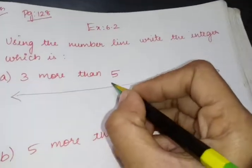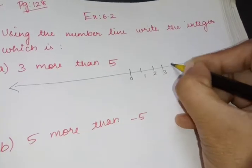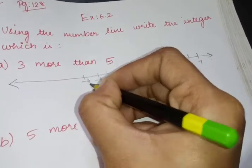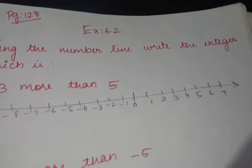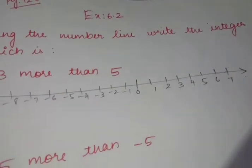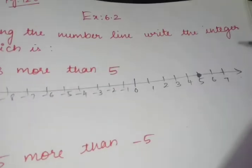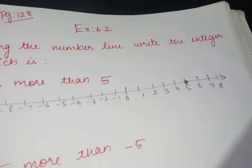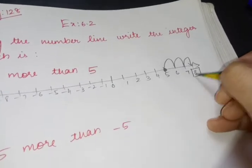I have just drawn a number line: 0, 1, 2, 3, 4, 5, 6, 7, and minus 1, minus 2, minus 3, minus 4, minus 5, minus 6, minus 7, minus 8. Now what is the integer we have to find? 3 more than 5. So the meaning is 3 digits more than 5. You are at 5 — you are in the place of 5. You can darken this place. You are going to shift 3 digits towards the right side, because 3 more than. 1, 2, 3. So what is the number you are getting now? 8.